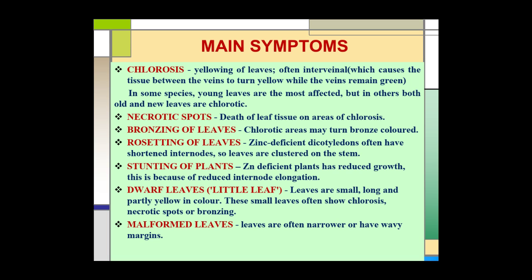The second main symptom is necrosis — necrotic spots, meaning the death of leaf tissues in the areas of chlorosis. The third symptom is bronzing of leaves, where the chlorotic areas may turn bronze-colored. Another main deficiency symptom is rosetting of leaves: in zinc-deficient dicotyledonous plants, internodes are often shortened, causing leaves to cluster on the stem, which is known as rosetting.